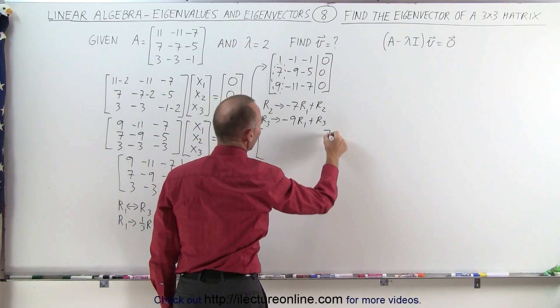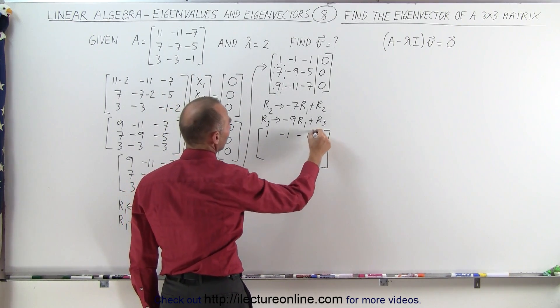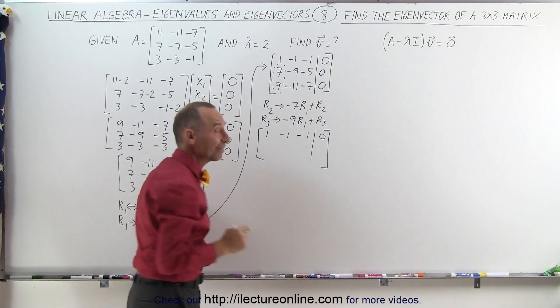When we do that, we get the following matrix. The first row doesn't change. 1, negative 1, negative 1, and 0. How about the second row? Well, that's the technique here.